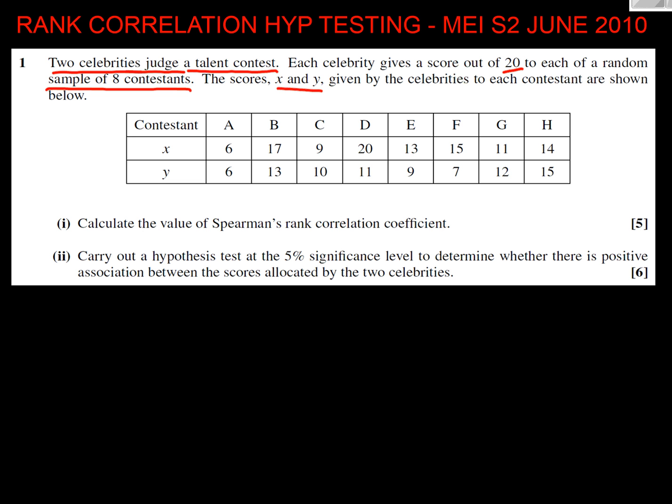What's it asked us to do? Calculate Spearman's rank correlation coefficient. And the second half is going to ask us to hypothesis test. So what's the first thing we have to do? Well, we have to rank the data. In this case, presumably the higher score, the better the contestant was. So we rank all the X data done by celebrity judge X, and then we rank all of that for celebrity judge Y.